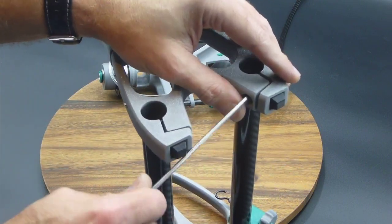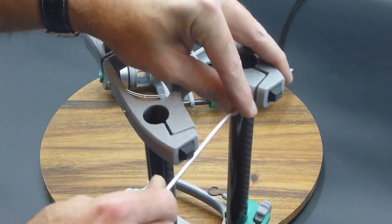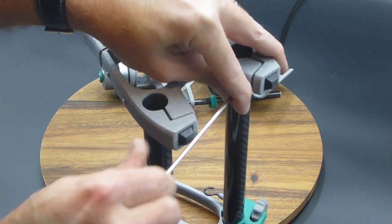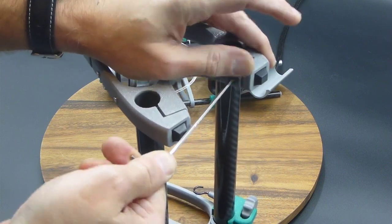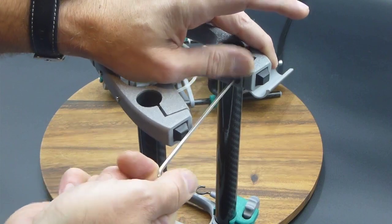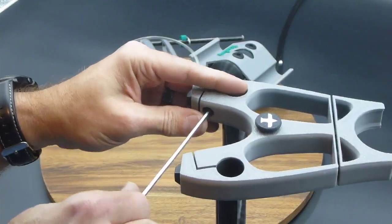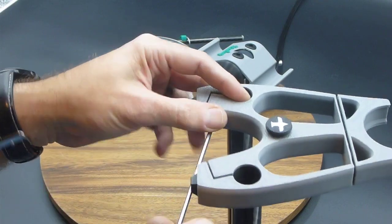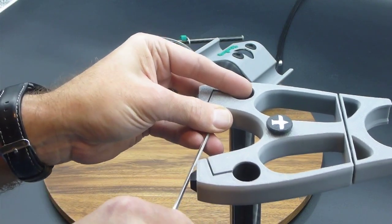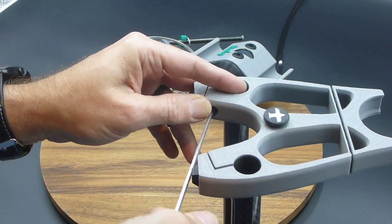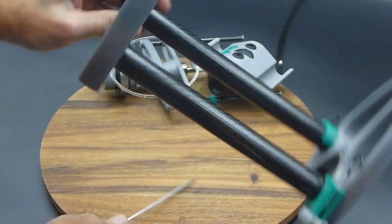Now we'll do the fronts. All right. And one left. All right. That's how simple the chassis goes together.